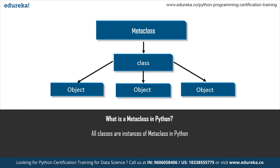Everything in Python is treated as an object, and even a class is treated as an object in Python. Since a class is also an object, it means that the class was instantiated from a different class. There is another class from which we are creating another object — and this class is called the metaclass.